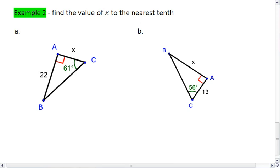So in this second example, we're still using our tangent ratios. We're using TOA, where tan of theta equals opposite over adjacent.